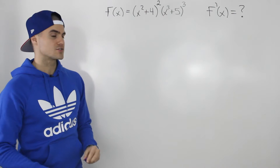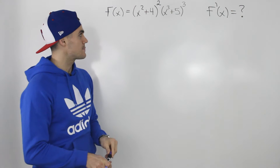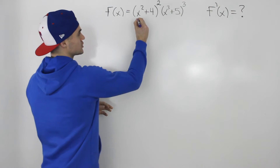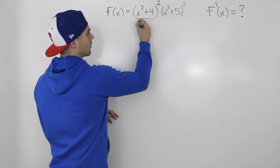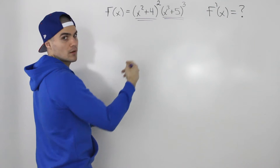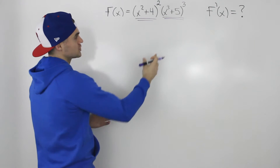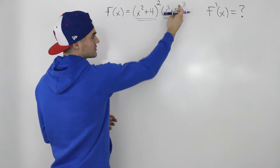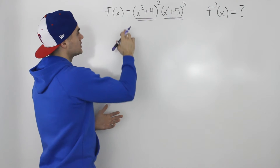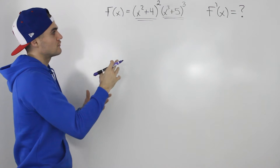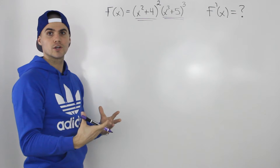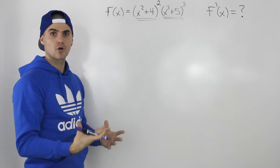The first thing to realize is that this function f of x is two functions that are multiplied by each other. This x squared plus 4 to the power of 2 represents one function, and x cubed plus 5 to the power of 3 represents another function. So because we're finding the derivative of two functions multiplied by each other, we know we're going to use the product rule.